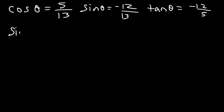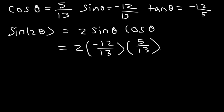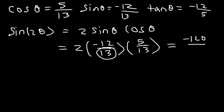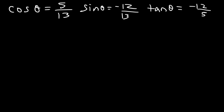Now let's find sine 2θ. Sine 2θ = 2 sine θ cosine θ. We have sine θ = −12/13 and cosine θ = 5/13. So 2 × 5 = 10, and 10 × (−12) = −120 on top. And 13 × 13 = 169 on the bottom. So sine 2θ = −120/169.